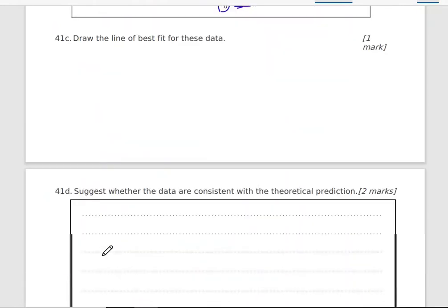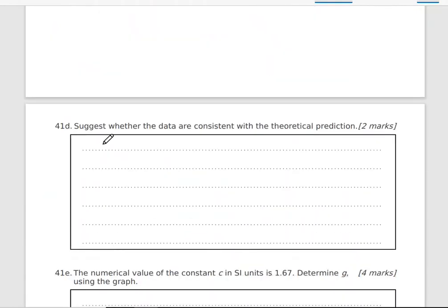Now D. Suggest whether the data are consistent with the theoretical prediction. Now what is the theoretical prediction? The equation that was given to us. T equals C constant divided by D, the horizontal distance between the two strings, times square root of the freefall acceleration.